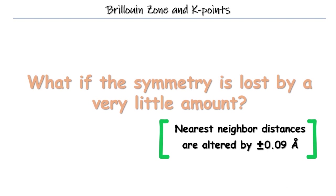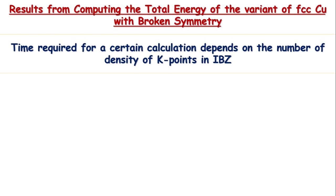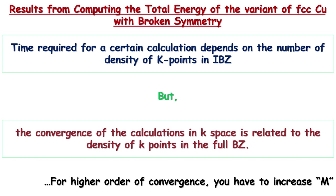Well, it is true that the time you are going to need for a certain calculation depends on the number of K points in IBZ, but doing the calculation in less time is not your first priority. Okay? Your first priority is the convergence. And convergence of calculation depends on the density of K points in full Brillouin zone. That is, your convergence depends upon the number M and the time you are going to need depends upon the number of K points in IBZ.